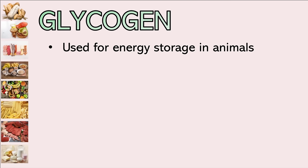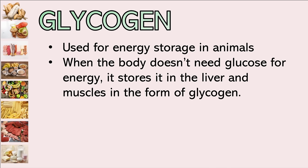For glycogen — while starch is for plants, glycogen is used for energy storage in animals. Whenever the body doesn't need glucose for energy, it stores it in the liver and in the muscles in the form of glycogen. So it's stored there and available when we need it.